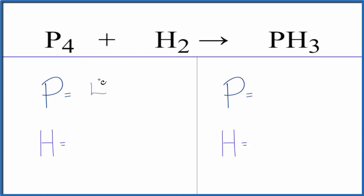We have four phosphorus atoms and two hydrogen on the reactant side. On the product, just one phosphorus and three hydrogens.